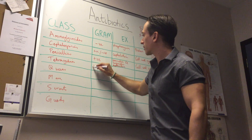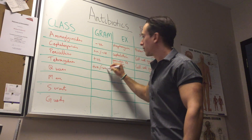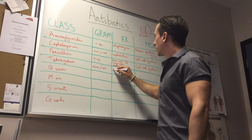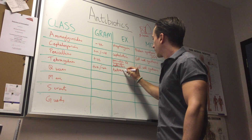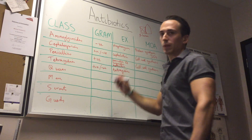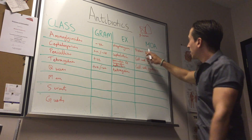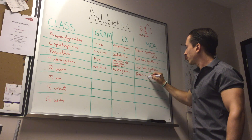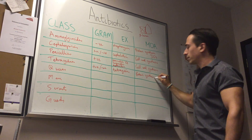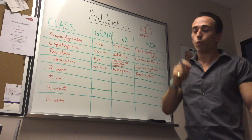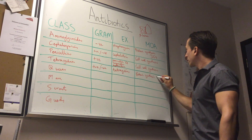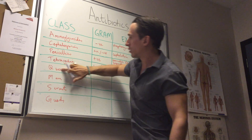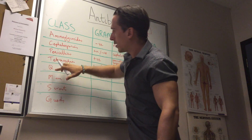'T' represents the tetracyclines. Tetracyclines can affect both gram-positive and gram-negative bacteria; an example is tetracycline itself. Their mechanism of action is inhibition of protein synthesis, specifically targeting the 30S ribosomal subunit — similar to aminoglycosides.